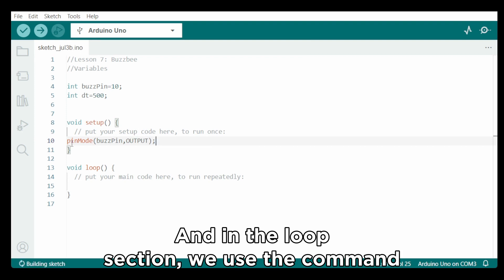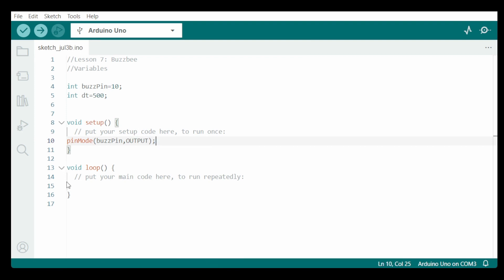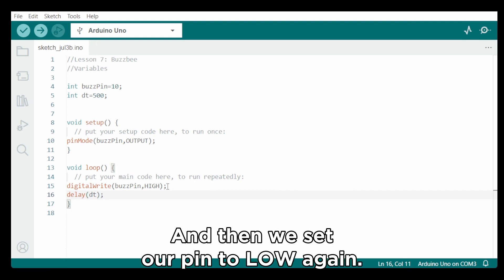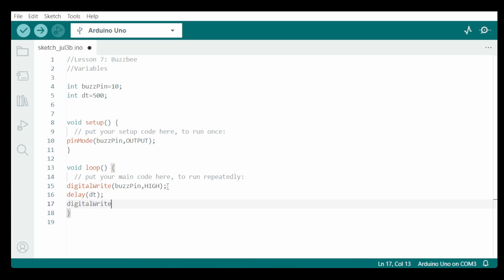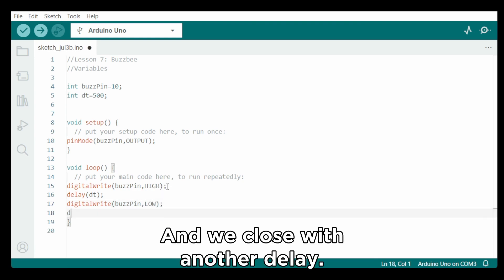And in the loop section, we use the command digitalwrite buspin high and then we set our pin to low again. Followed by a delay dt and then we set our pin to low again and we close with another delay.